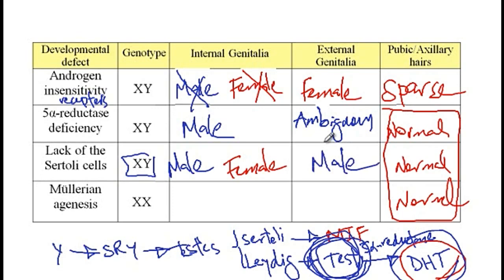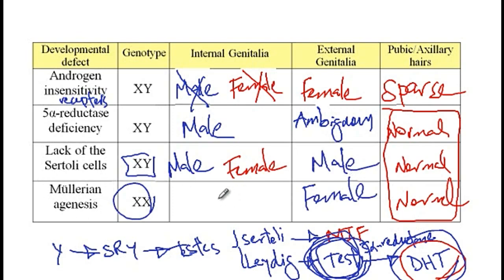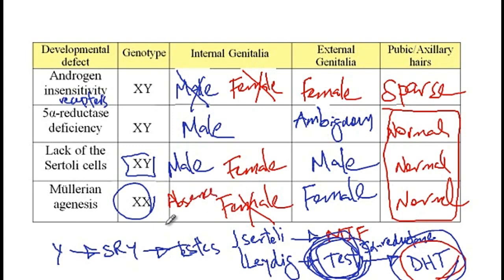Finally, Müllerian agenesis in females: these patients have female external genitalia, but since the Müllerian ducts do not develop, female internal genitalia is absent. These patients will present with the absence of a uterus.